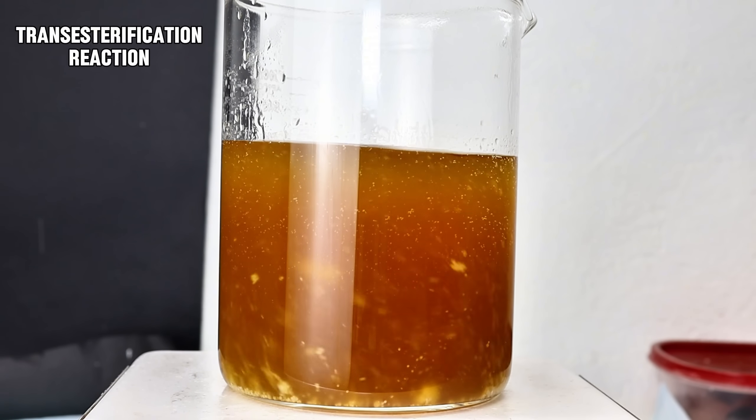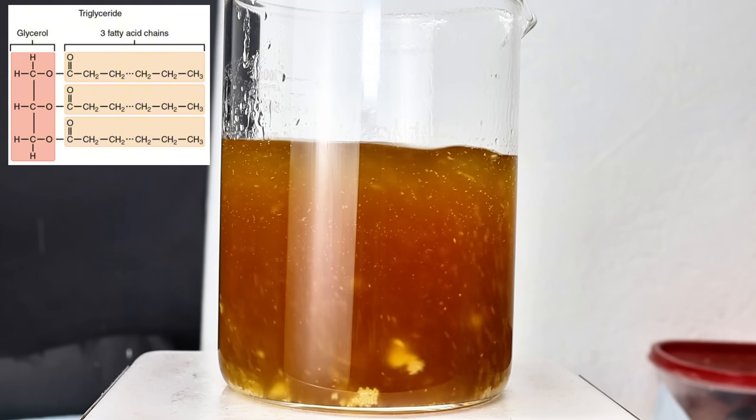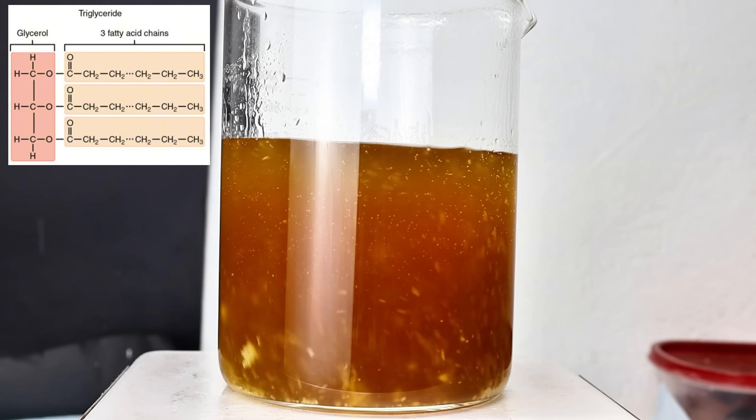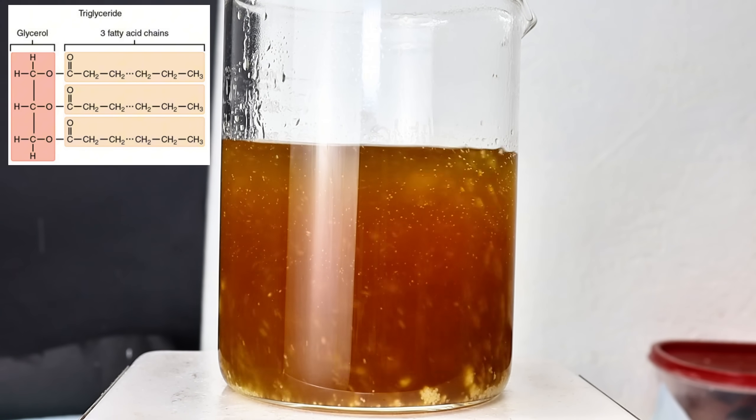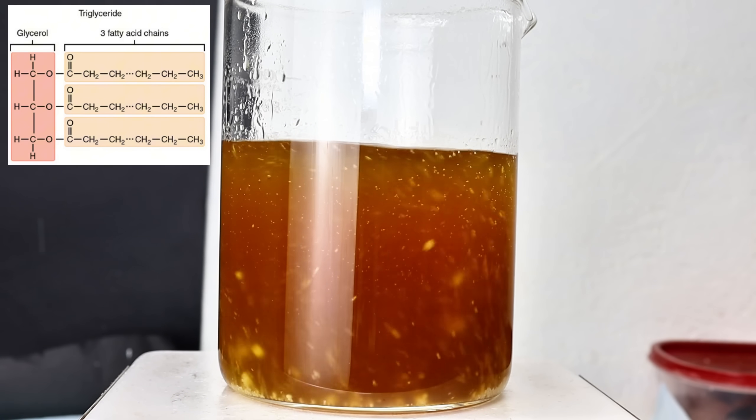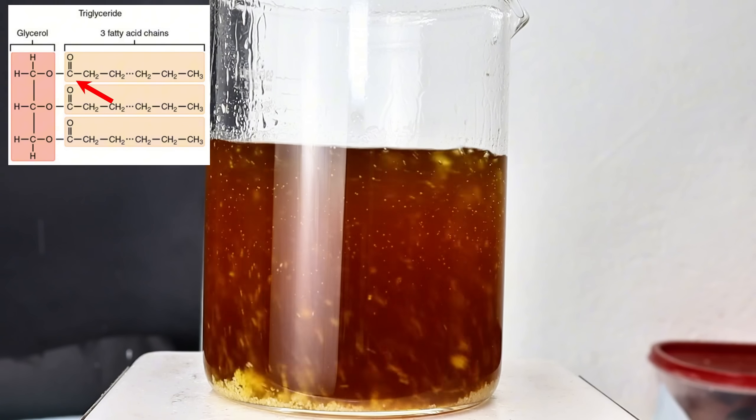Oils and fats are composed primarily of molecules called triglycerides, which are further composed of three fatty acids bound to glycerol. In this transesterification reaction, the sodium methoxide attacks the carbonyl here, forming an unstable tertiary intermediate.